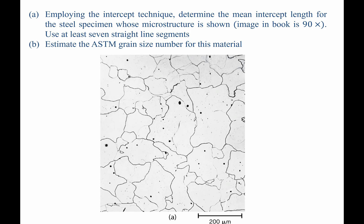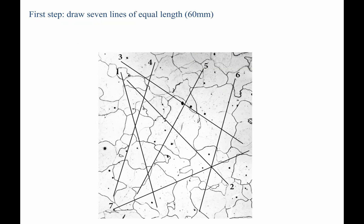As we employ the line intercept technique, we are told to use at least 7 straight line segments. And for part B, once we know the mean intercept length, we are asked to determine the ASTM grain size number for this material. The first step would be to draw 7 lines of equal length randomly across your sample.